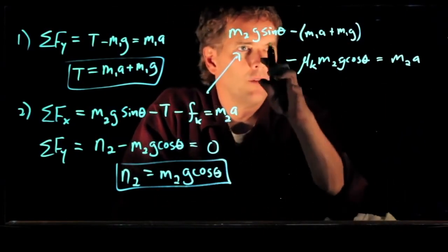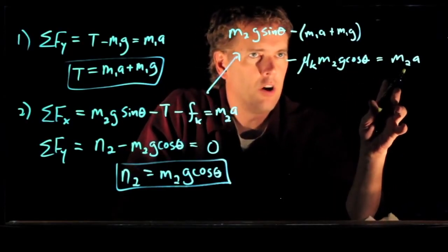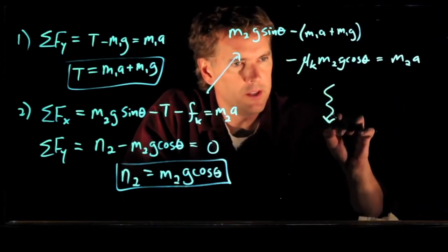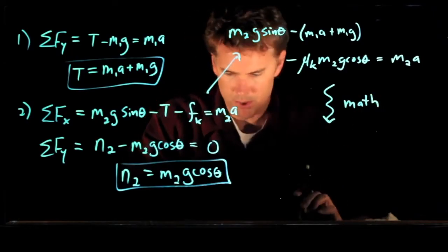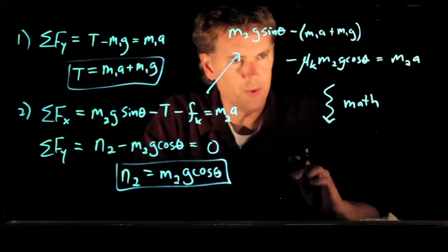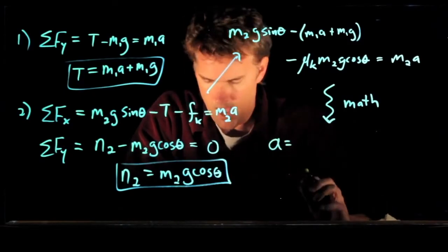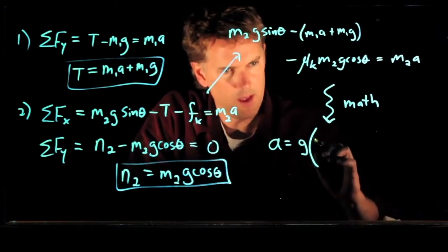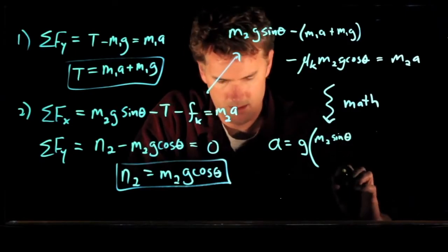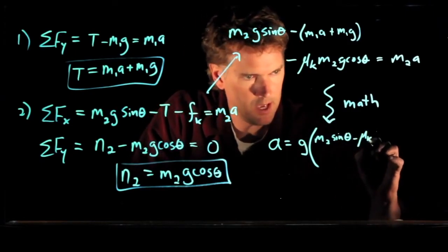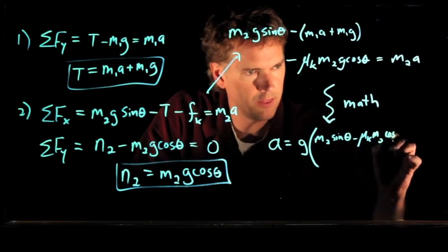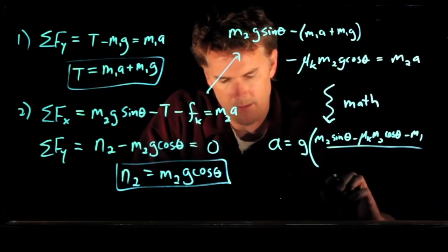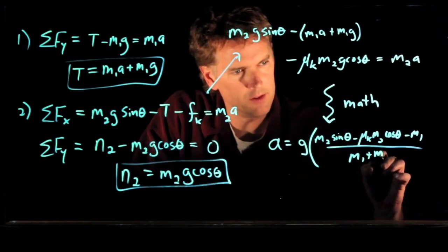So now look what we have. We have one equation. And we can solve this for acceleration a. And I'm not going to bore you with all the details. You can double check it on your own. But you do a little bit of math. And what you should end up with is the following. A is equal to g times the quantity M2 sine theta minus mu k M2 cosine theta minus M1, all of that over M1 plus M2.